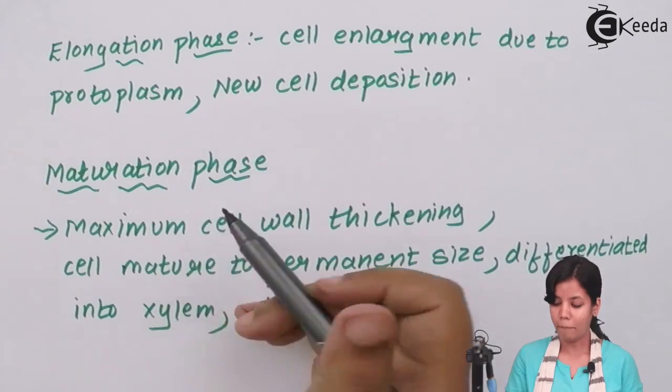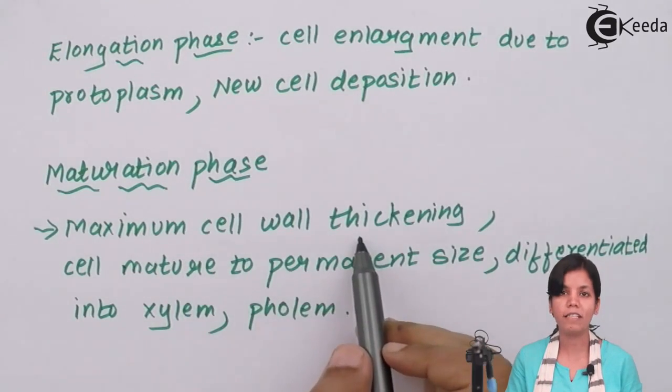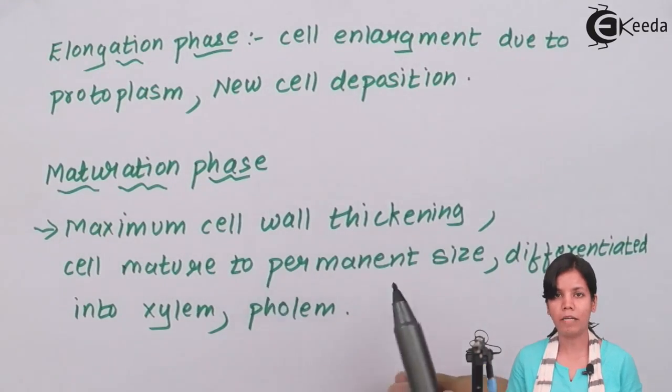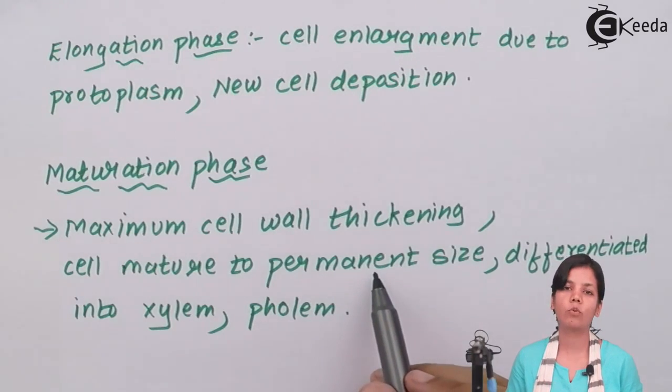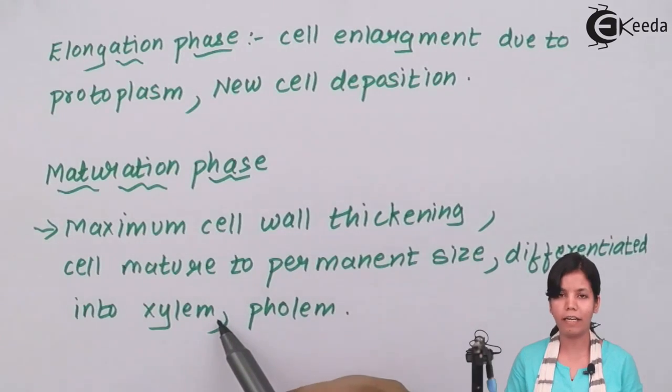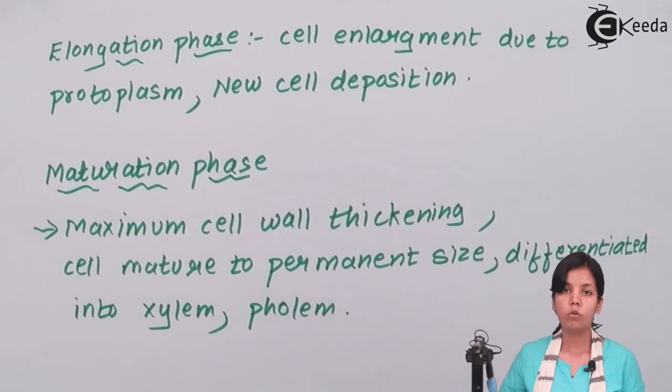The third phase, maturation phase. Maximum cell wall thickening. Obviously the cell is completely formed. Now the cell wall has to thicken so that it doesn't break easily. Cell matures to a permanent size. Every cell gets to know their function. There is differentiation happening. Basically who will be parenchyma, who will be sclerenchyma, who will prepare food, who will do respiration, who will bring water. All these things are divided in maturation phase. So I hope students you all have understood the three different phases of plant life cycle. Thank you.